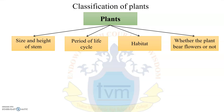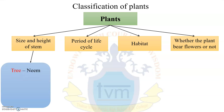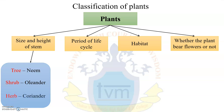According to the size and height of the stem, plants can be further classified as tree — for example, mango — shrub — for example, oleander — and herb — for example, coriander.